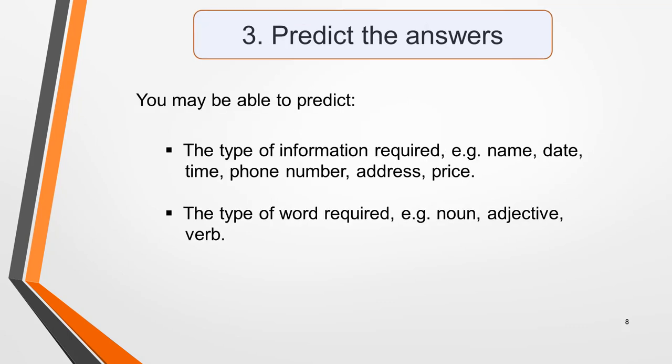The next task is to try to predict what the answer might be. This will focus your mind on what to listen out for in the recording. Occasionally you'll be able to predict the actual word, but mostly you'll be able to determine the type of information required, for example a name, a date, a time, a phone number, an address or a price, or the type of word required, such as a noun, an adjective or a verb. Any clues you can get will help you to understand the audio and identify the information needed for the answers.